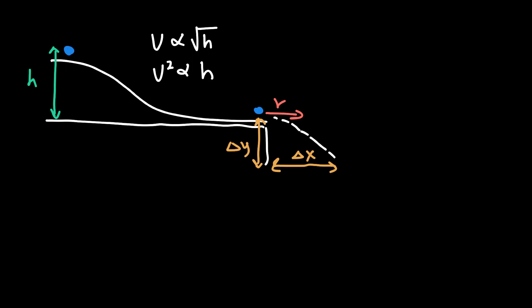That's what we found in the experiment. Now we're trying to use this relationship to understand the energy of the ball at the top of the track and the energy at the bottom. There are two positions: position 1 at the top, where the ball must have some type of energy due to its height. We call that gravitational potential energy.